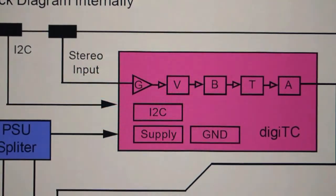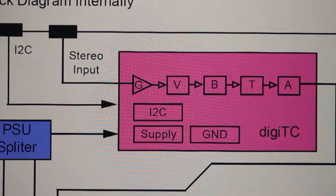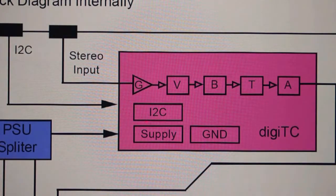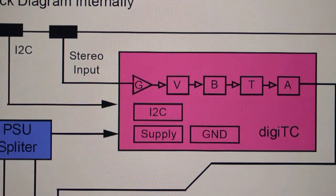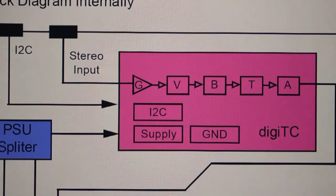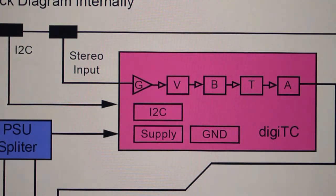Internally inside the IC we have the I2C block, which is the interface to the microcontroller. This is basically a two-wire line — three wires if you include the ground. Internally within the IC we also have its own power supply and grounding. The DGTC IC uses a hybrid grounding system where we have the analog ground from the stereo and another one is the digital ground from the microcontroller. We'll look at how to isolate the analog ground, the power supply ground, and the digital ground.